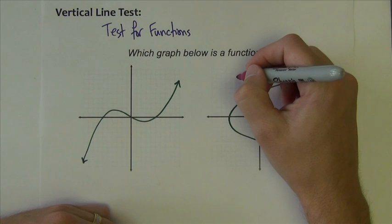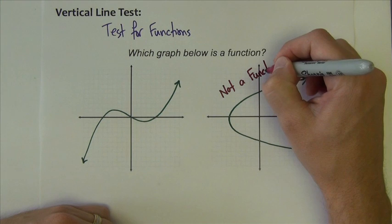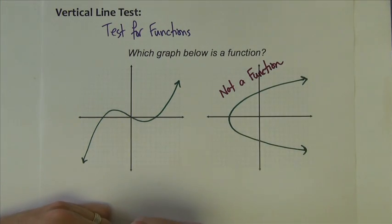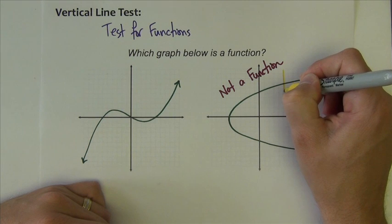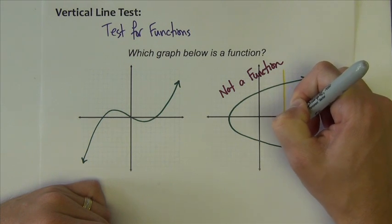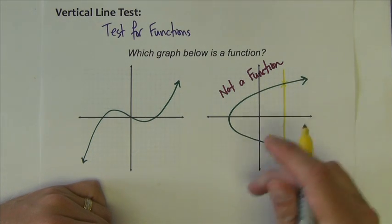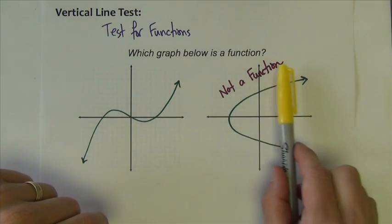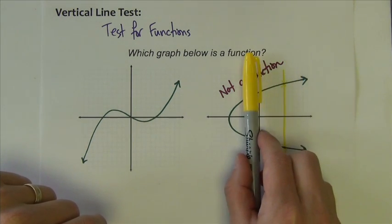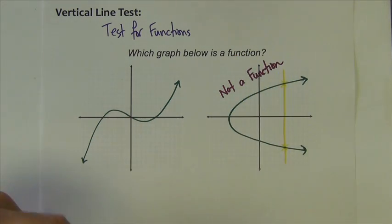This one over here is not a function. It's not a function because it fails the vertical line test. Vertical line test tells us that if I put a vertical line anywhere on this graph, if it hits the graph more than once, then it doesn't pass. If I take this vertical line and move it left and right, it's going to hit the graph twice in multiple spots so it doesn't pass the vertical line test.